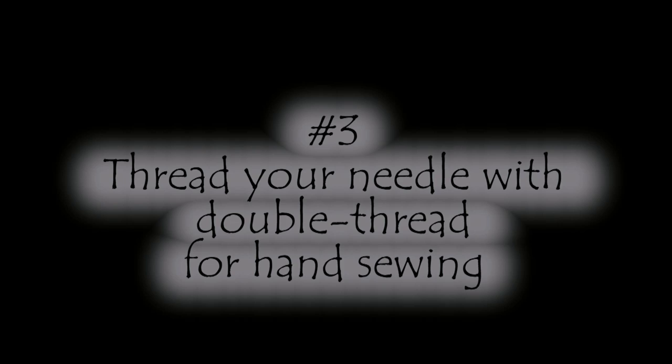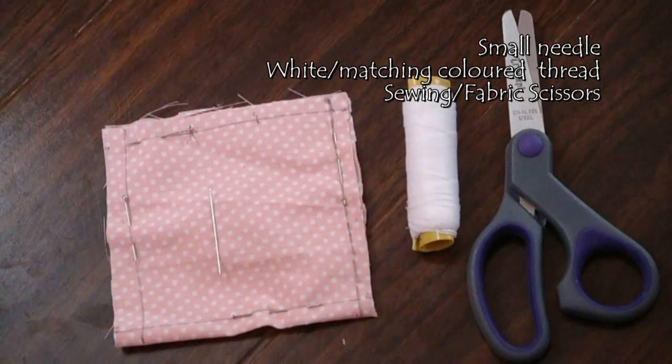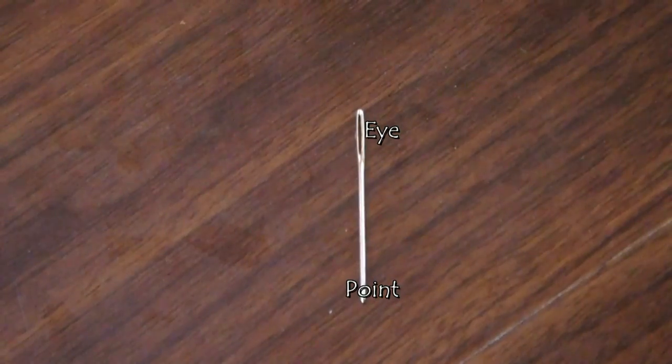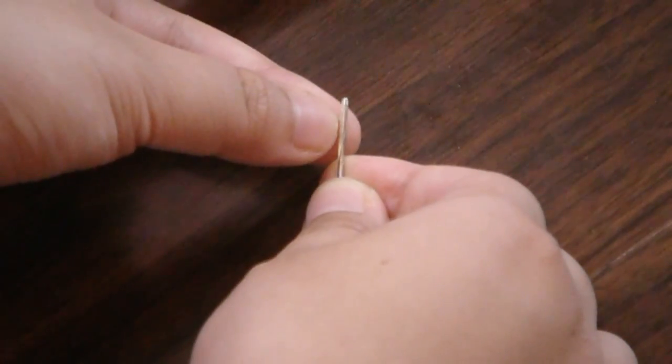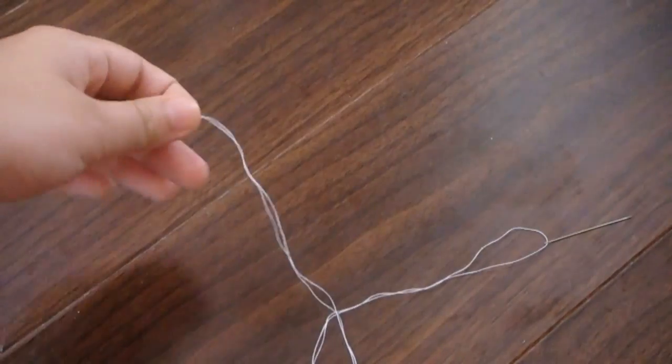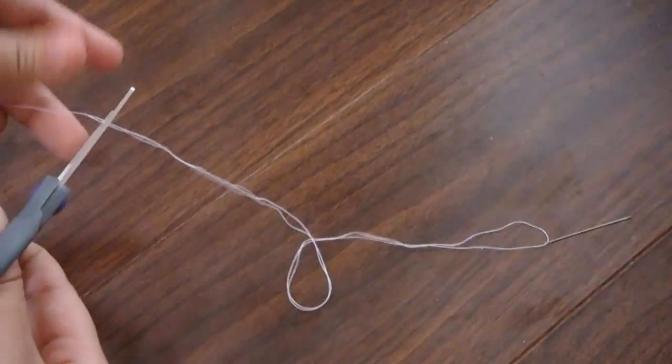Now let's prepare for sewing by threading the needle. I'm using a larger needle to show you how to thread. Basically you just get the thread in the eye of the needle, pull it, cut and tie the two ends together.